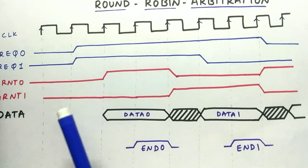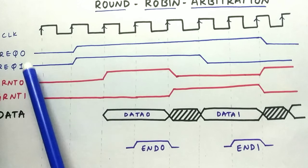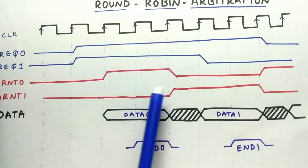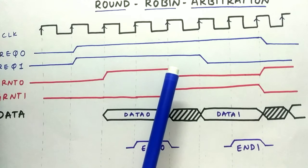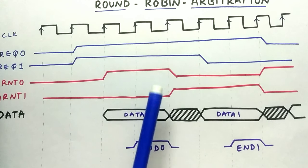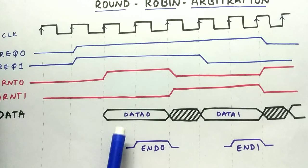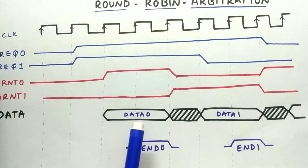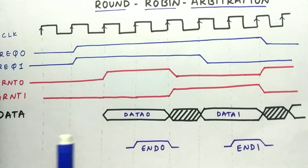The main problem with round-robin arbitration is that an agent can keep the resources as long as it wants. For example, request 0 can keep the resources indefinitely by not asserting the end-of-transaction signal. That's the major problem with round-robin arbitration.